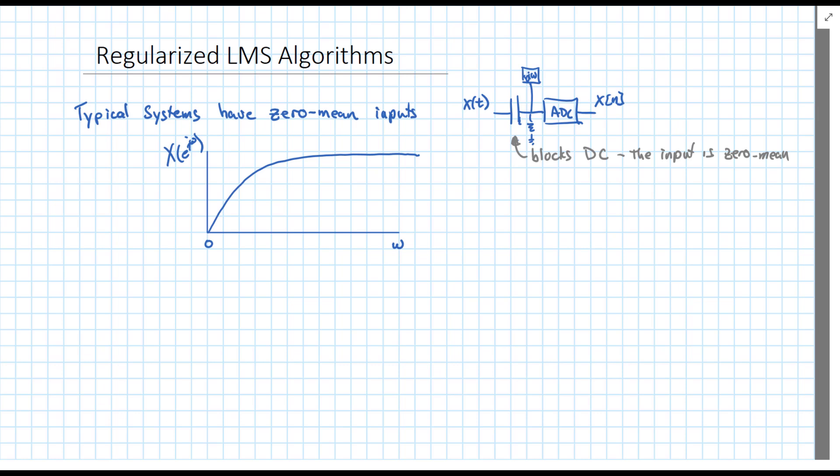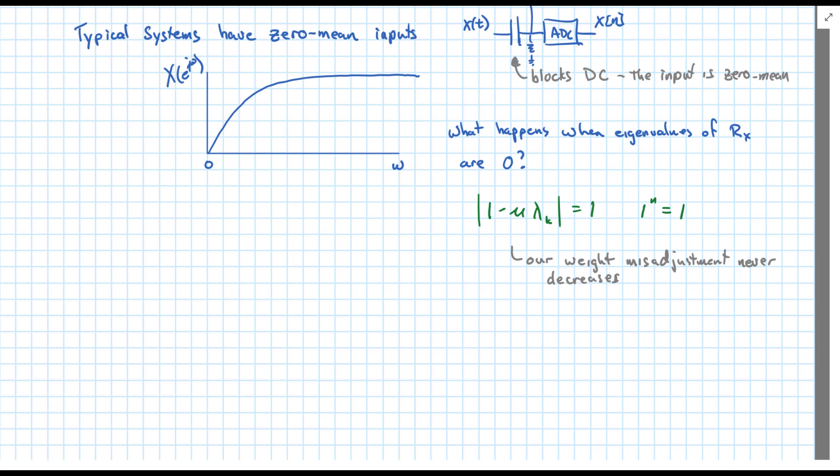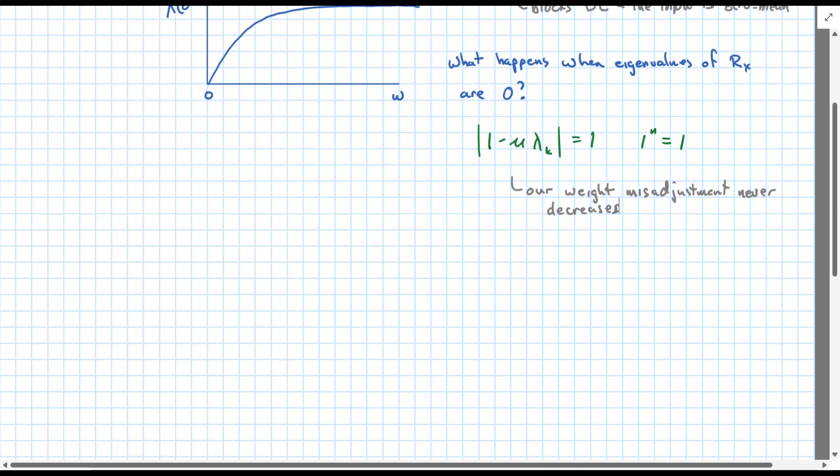So what happens when we have eigenvalues of our Rx that are zero? Well, we've run across this before. We have our convergence modes look like one minus mu times lambda i to the n. And in the case of an eigenvalue of zero, that equals one to the n, which of course equals one for all values of n. In other words, our weight misadjustment never decreases, at least along some dimension.